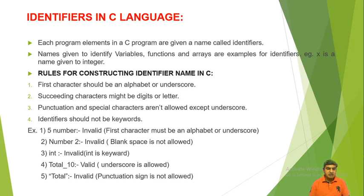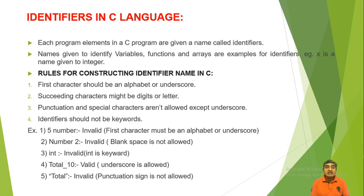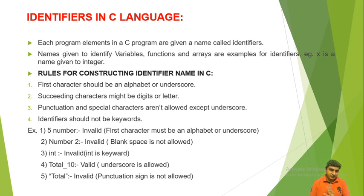Fourth rule: identifier should not be a keyword. Examples — 'five number' is invalid because the first character must be an alphabet or underscore, not a digit. 'Number two' is invalid because there is a blank space between 'number' and 'two', which is not allowed. 'Integer' is also invalid because it is a keyword and cannot be used as an identifier.